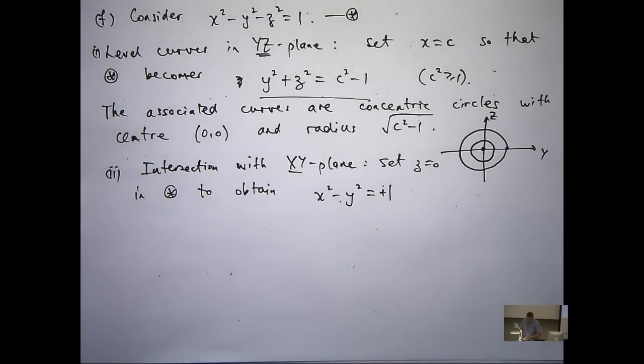Okay, so x squared minus y squared equals positive 1. Anybody know what kind of curve does that lead to? What kind of curve in the x-y plane? x squared minus y squared equals 1. Yeah, hyperbola, right, a hyperbola.